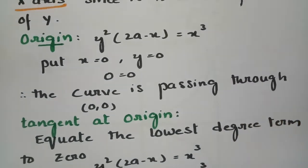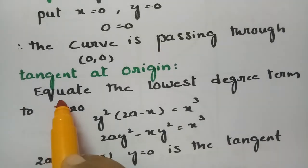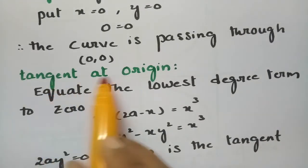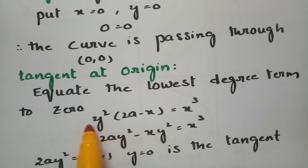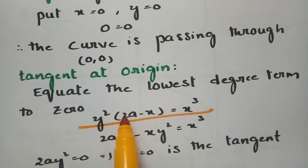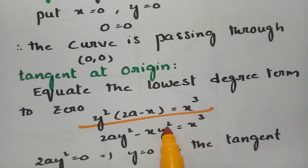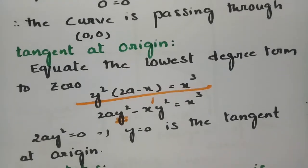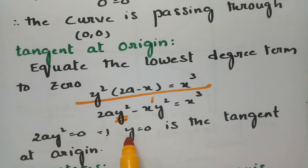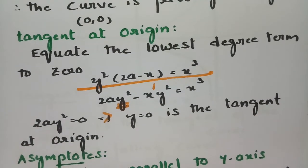Next, checking the origin: putting x = 0 and y = 0, the equation is satisfied, so the curve passes through the origin. To find the tangent at origin, equate the lowest degree terms to 0. Expanding gives 2ay² − xy² = x³, so the lowest degree term is 2ay² = 0, which gives y² = 0 as the tangent at the origin.